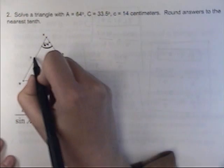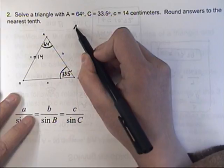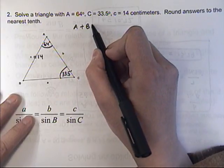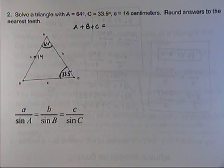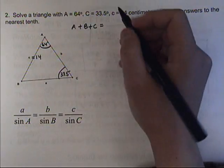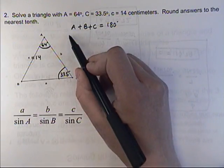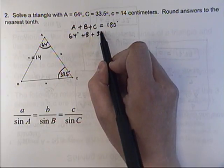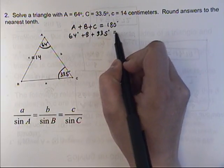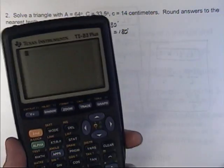And side C is 14 centimeters. Again, just like example one, I know that all three interior angles in a triangle add up to 180 degrees, so it should be easy to find angle B. A is 64, and C is 33.5.